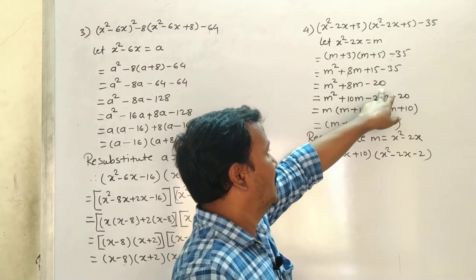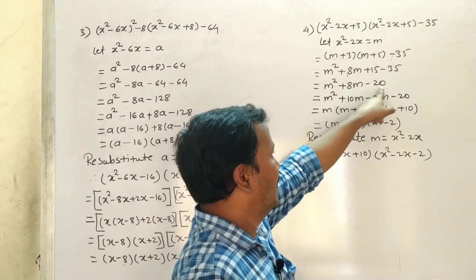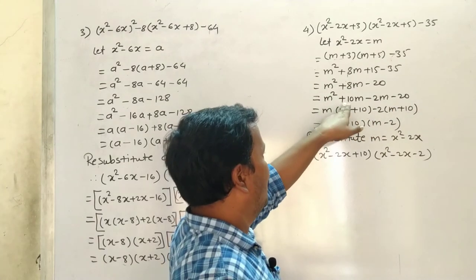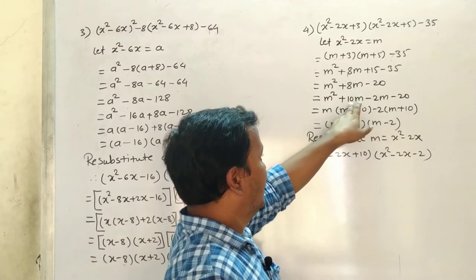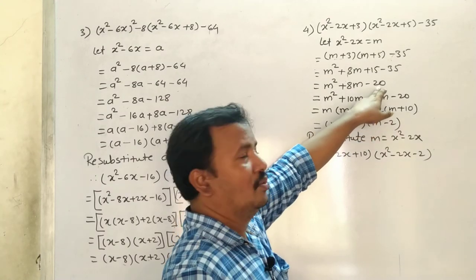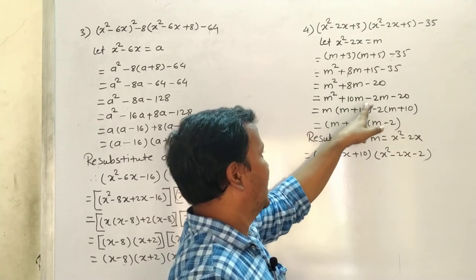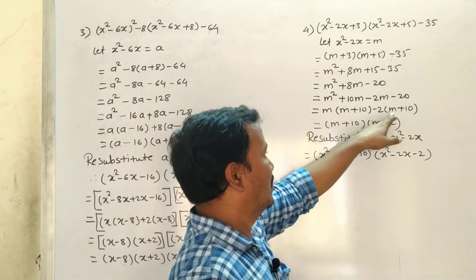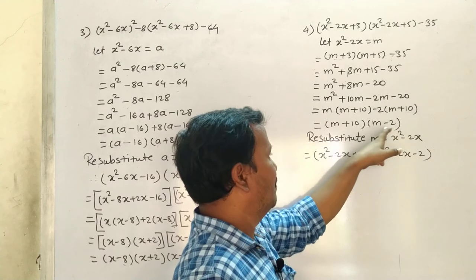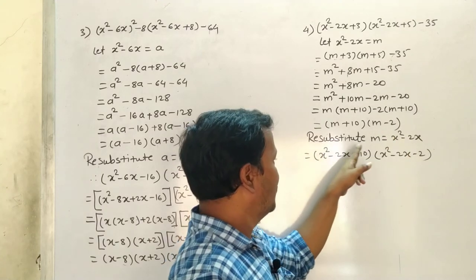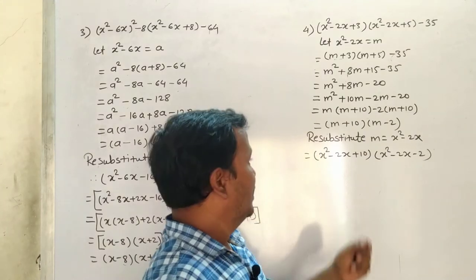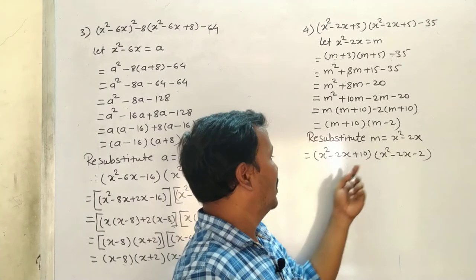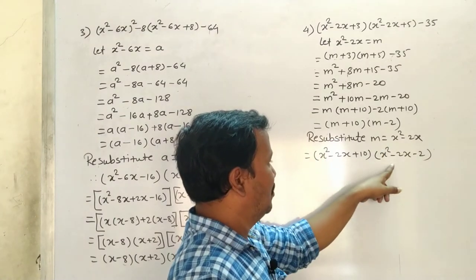So m² + 8m - 20. We need to multiply to -20 and add to get 8: so 10 and -2. That gives m² + 10m - 2m - 20. Taking m common: m(m + 10) - 2(m + 10) = (m + 10)(m - 2). Substituting back, m = x² - 2x, so the factors are (x² - 2x + 10)(x² - 2x - 2).